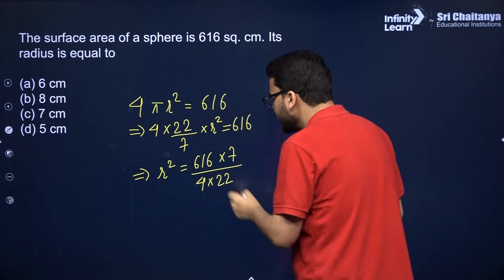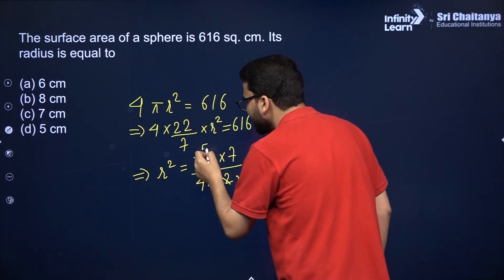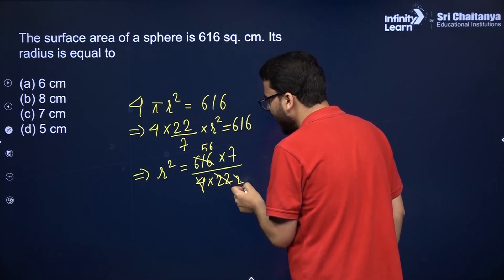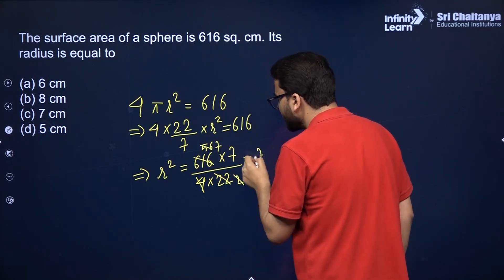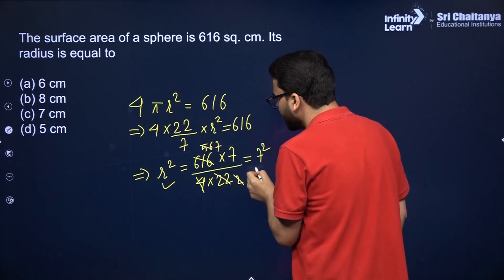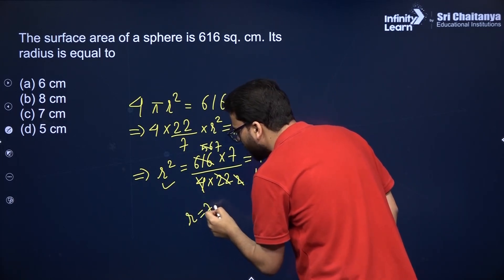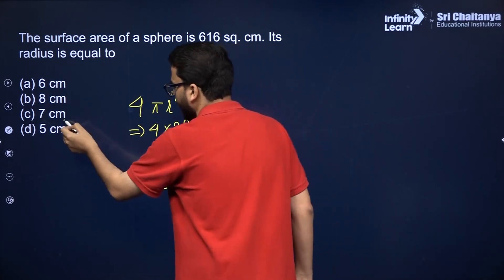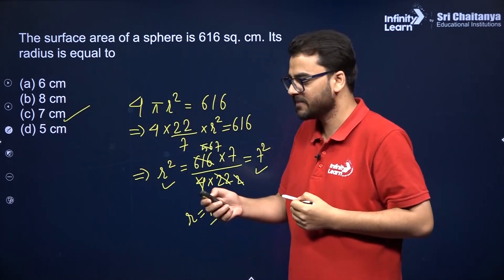Let us simplify: 11 twos are 22, 11 fives are 55, 11 sixes are 66 — then 4 twos are 8, 8 sevens are 56. This simplifies to 7 squared. So R² = 7², meaning the radius of the sphere is equal to 7 cm. I hope this question is clear to you. Let's take the next MCQ.